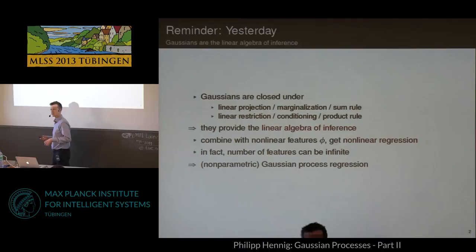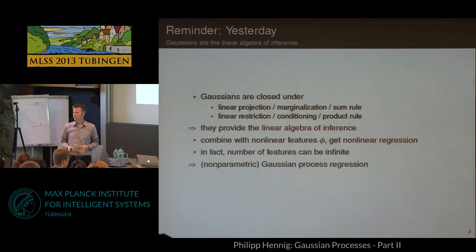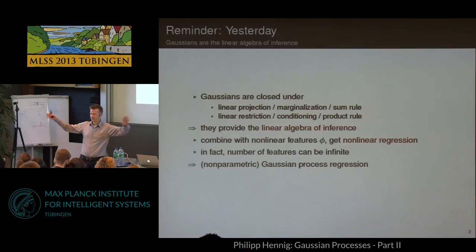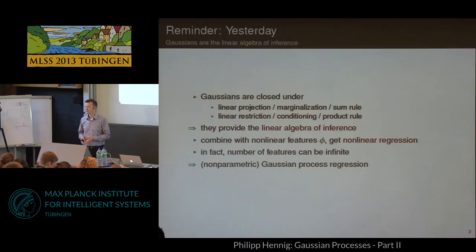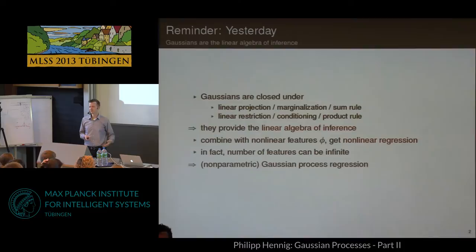Then I spoke at length about parametric regression, which uses nonlinear features to model nonlinear functions. Someone asked me afterwards whether there's any limitation on what kind of features you can use. As far as I know, there's no limitation. You can really use whichever feature you come up with. They don't have to be continuous, as we noticed from the step functions. They don't even have to be local — you can have features that have non-zero shape at distant regions far apart from each other.